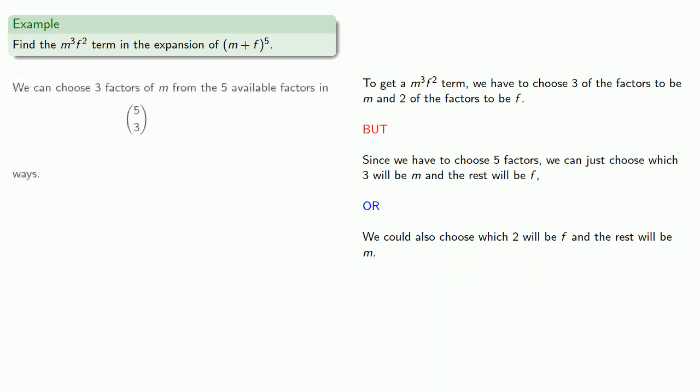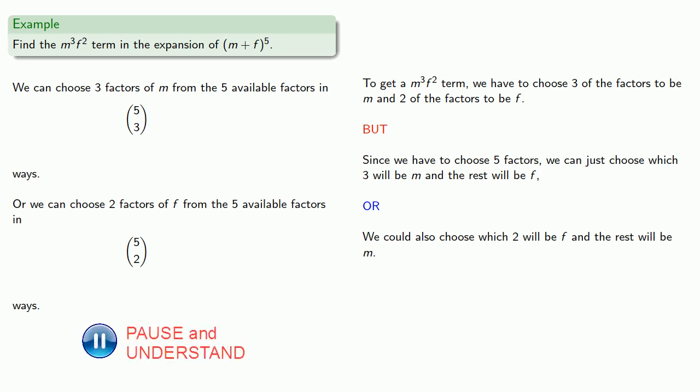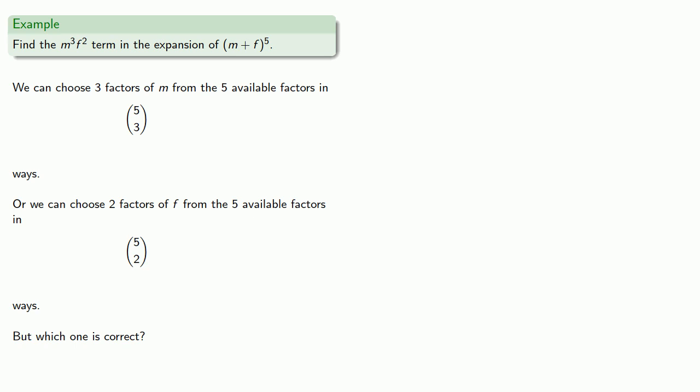Or we could also choose which 2 will be f and allow the rest to be m. So we can choose 3 factors of m from the 5 available factors, that's 5 choose 3. Or we can choose 2 factors of f from the 5 available factors in 5 choose 2 ways. But which one is correct? Let's compute 5 choose 3. That's 5 factorial divided by 3 factorial times 5 minus 3 factorial. I can find 5 minus 3, that's 2.